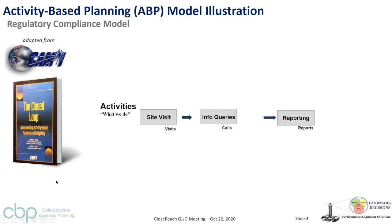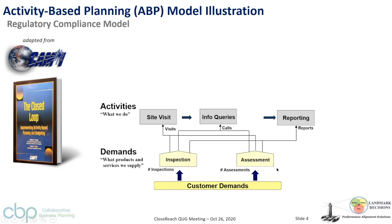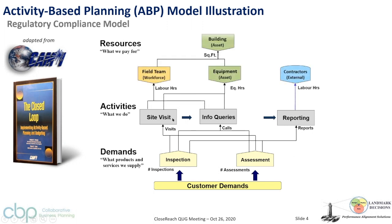Activity-based planning — what CBP was originally built on — follows a methodology called the closed loop. It asks: what drives the business process? What customer demands do you have? In this case, inspections and assessments. Those demands drive requirements for activities, and those activities are performed by people, facilities, and equipment — the resources. We build a process map that flows from the bottom up, from resource requirements to meet outputs or demands.